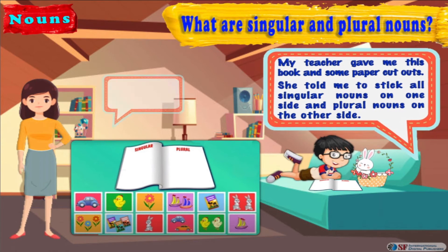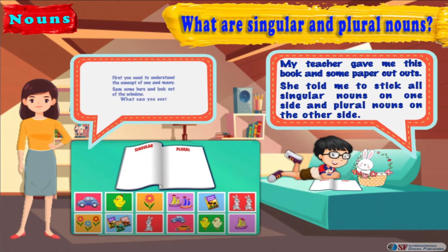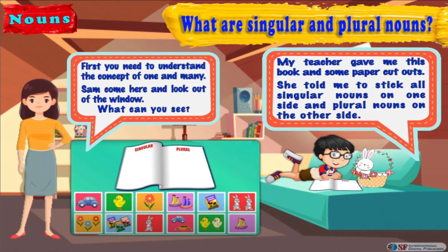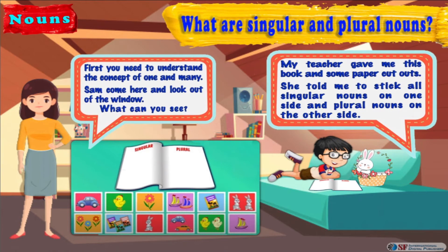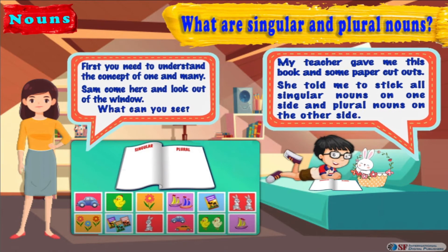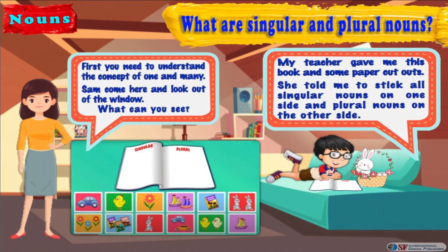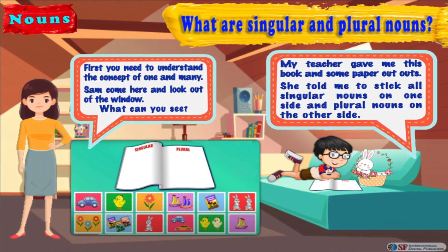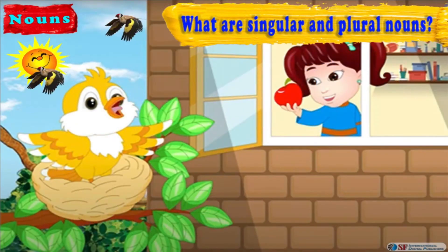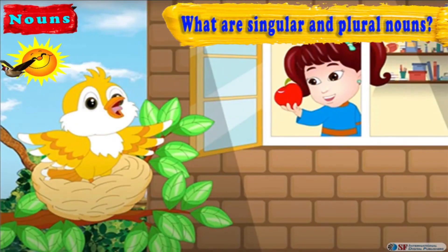To solve this activity, first you need to understand the concept of one and many. Sam, come here and look out of the window. Can you tell me what can you see? I can see a girl looking out of her window with an apple in her hand and a bird sitting in its nest.